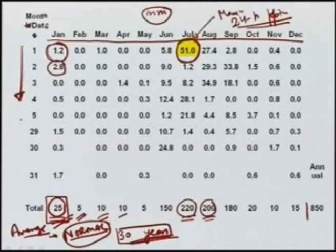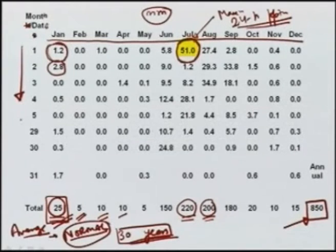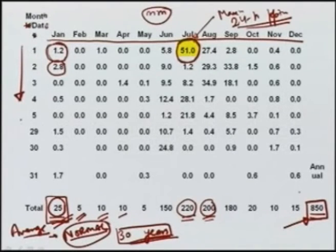Annual precipitation is the other important parameter. Here we see that the sum of all monthly precipitation is 850 millimeters. So in this particular year at the station, the rainfall recorded was 850 millimeters.